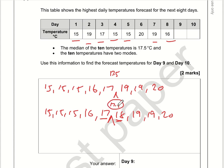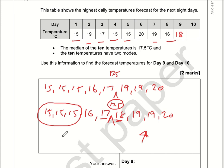So the ordered list is: 15, 15, 15, 16, 17, 18, 19, 19, 20. These are the 2 in the middle that give the median of 17.5. To the left of 17.5 I've got 4 values, and on the right I've got 4 values, so there is a missing value on the right-hand side. I can fill in that one of the values is 18. There are two modes, and we can see that 15 appears three times, so we need another number to appear three times. The only way we can do that is to add in another 19. So the two missing values are 18 and 19.